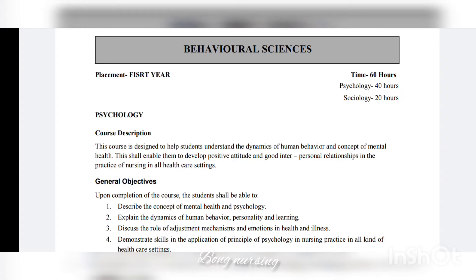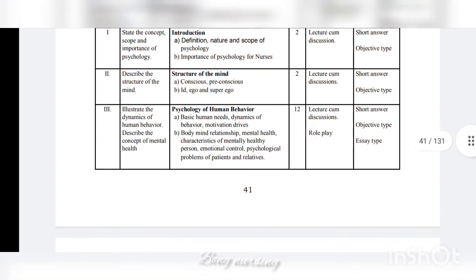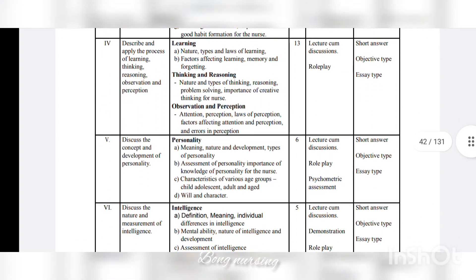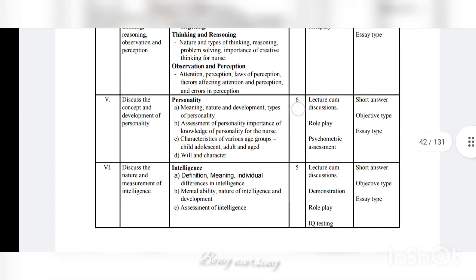I will tell you about the topics addressed in psychology. Unit one is the introduction: definition, scope, and importance of psychology, and the structure of the mind — the preconscious, conscious mind, ego, and superego. Unit two covers psychology of human behavior, basic human needs, and body-mind relationship and mental health. Unit three covers learning: nature, types, memory, thinking, and perception.